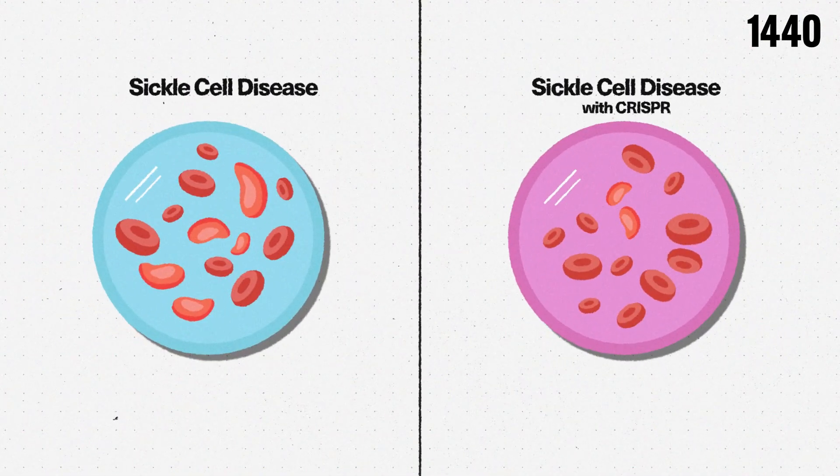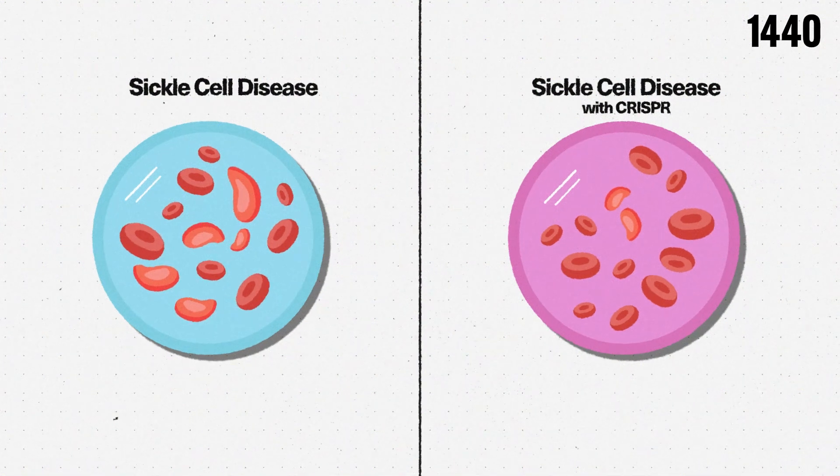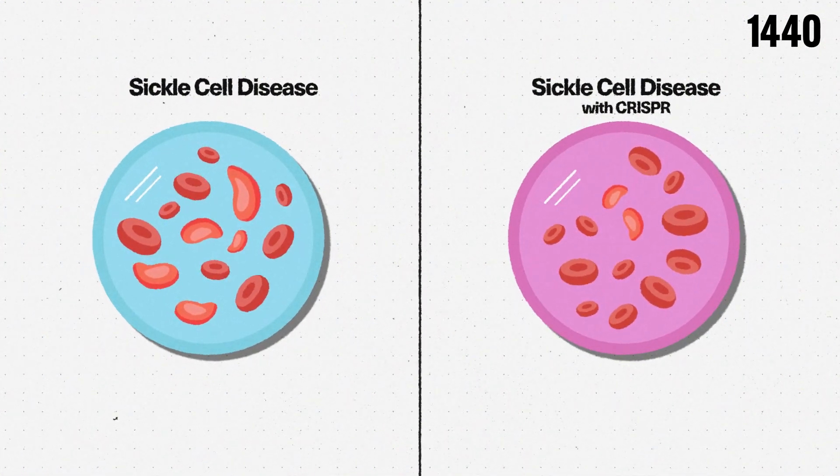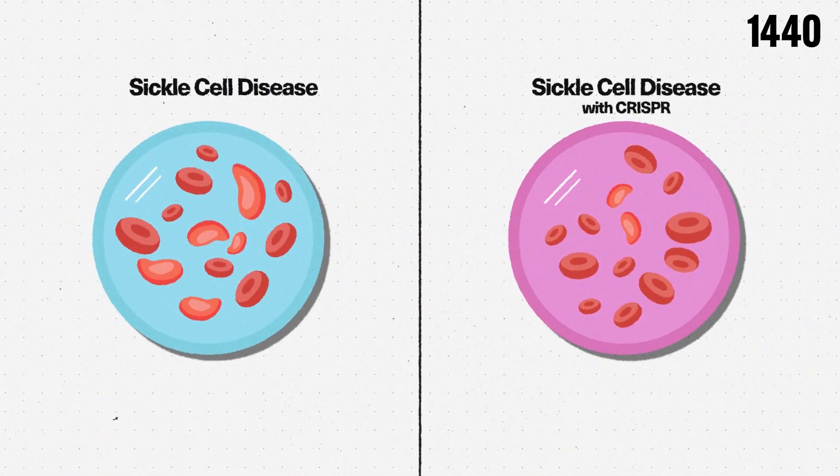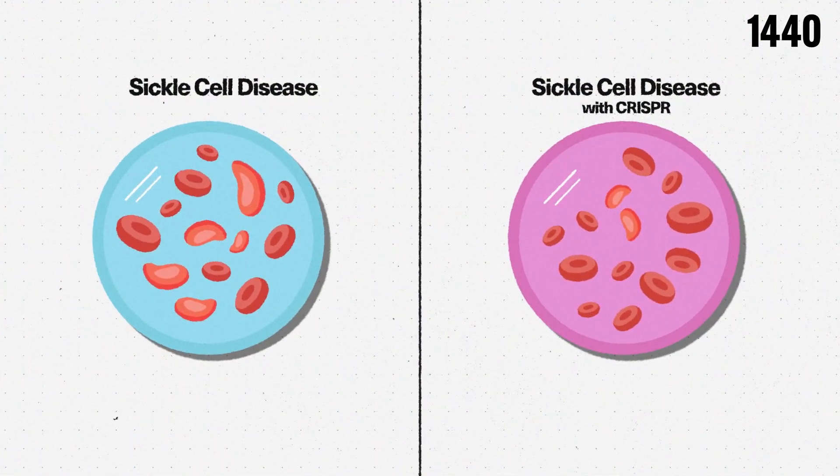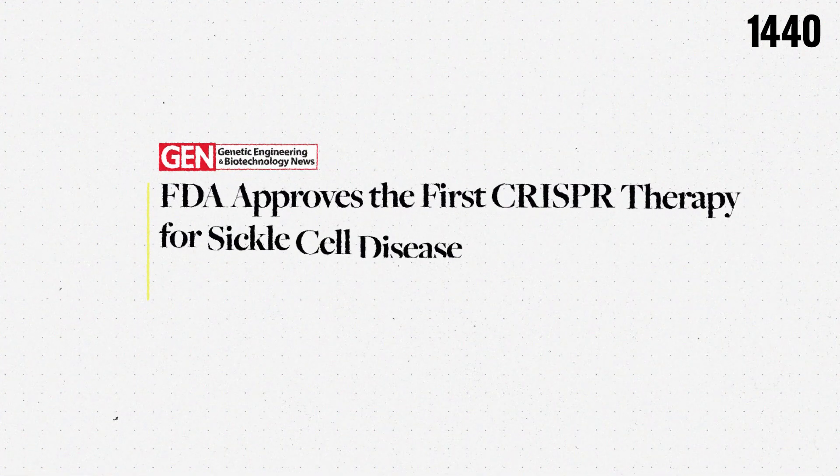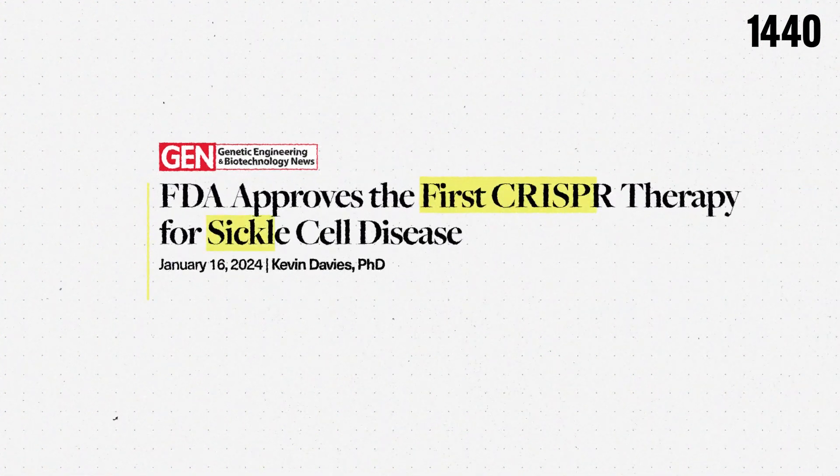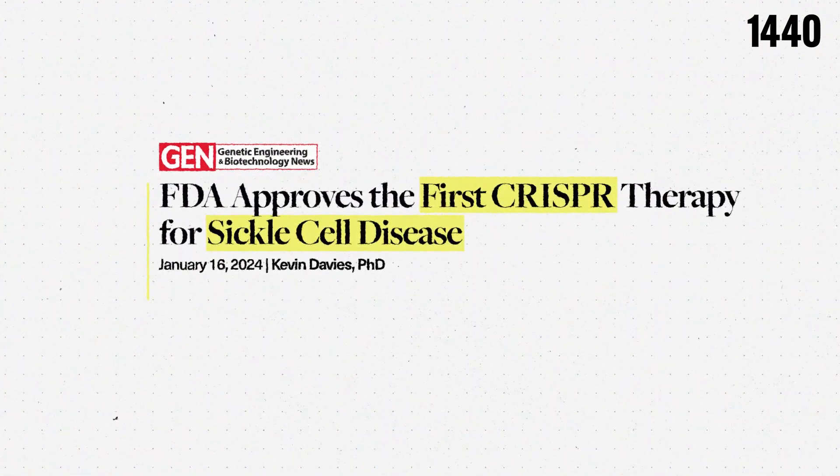But through the use of CRISPR, scientists have successfully edited the gene responsible for producing malfunctioning hemoglobin, enabling the production of healthy versions of the cells. Patients have reported the disappearance of symptoms, and the treatment received FDA approval in late 2023.